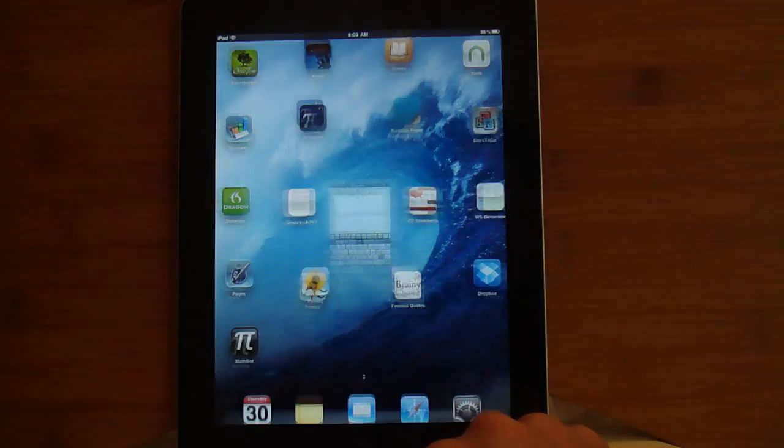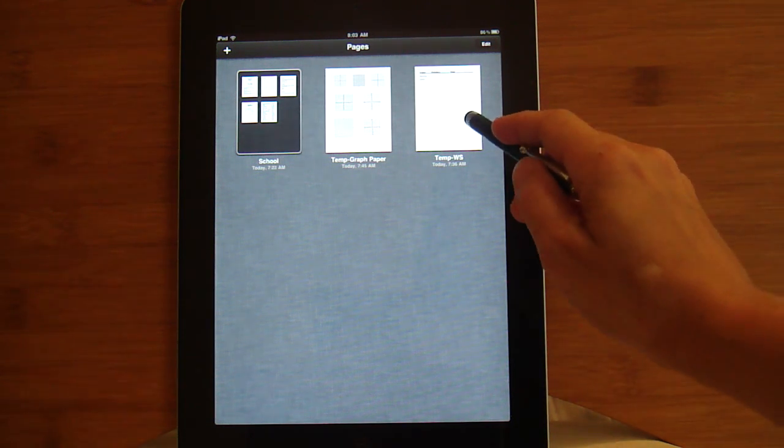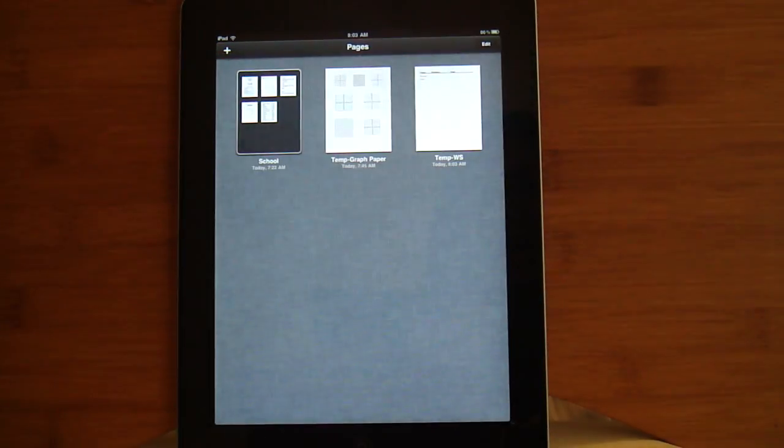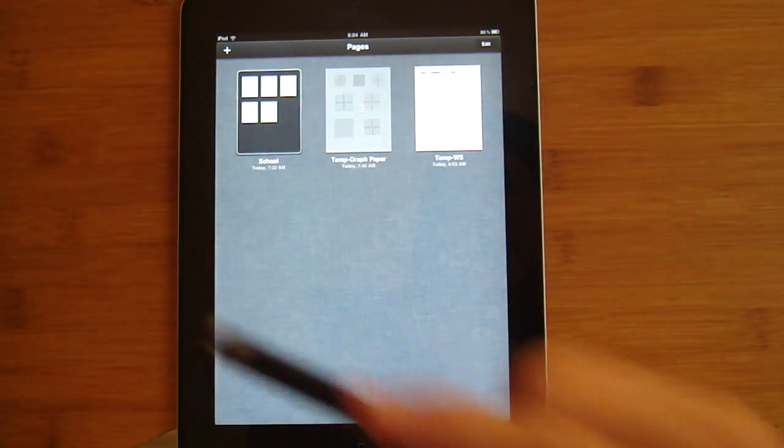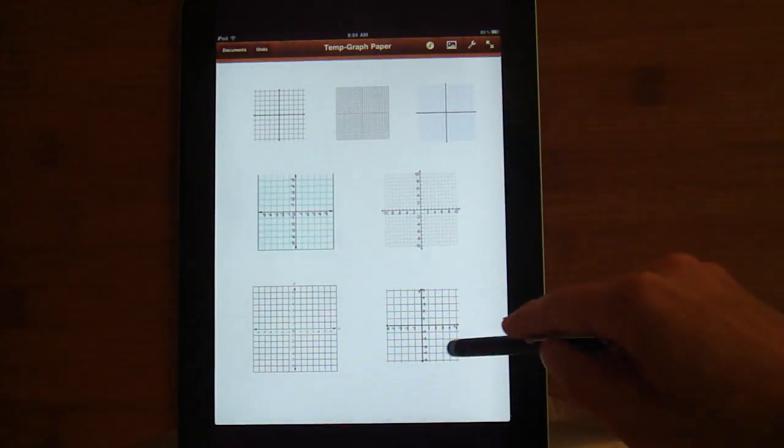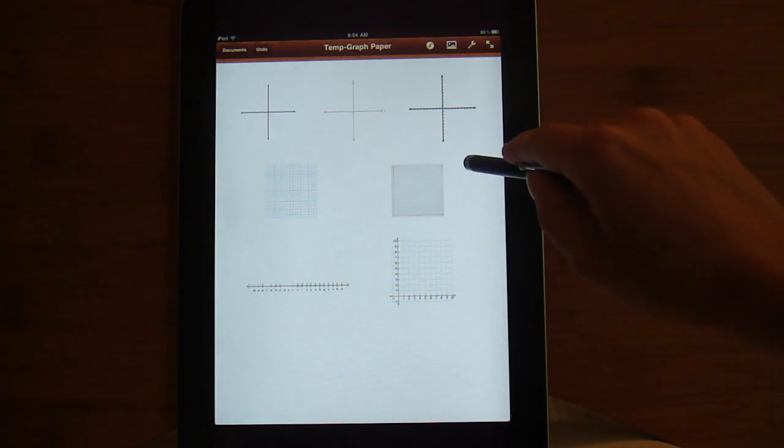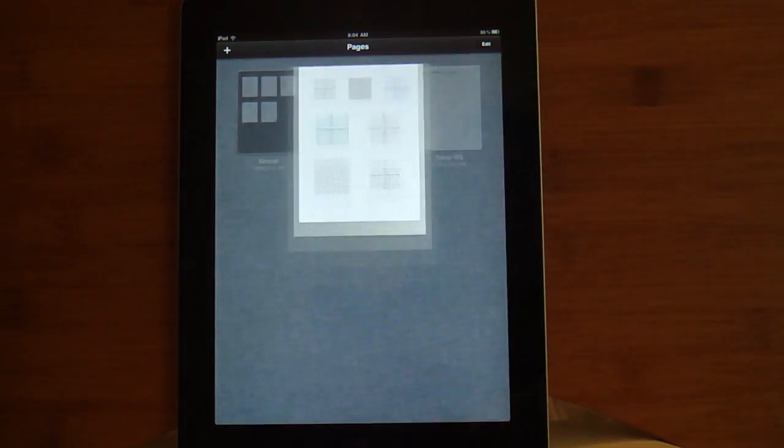Now I'm going to go to Pages, and I've got some templates already set up in here. Here's a template for a worksheet, and I've got a template that I use for graph paper. I just went through the internet, searched for some images of different types of graph paper that I might want to use in the future.